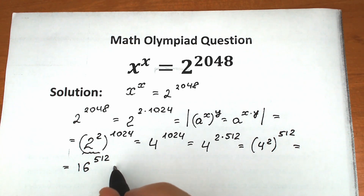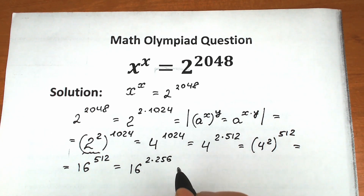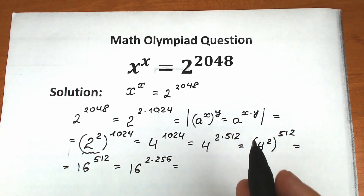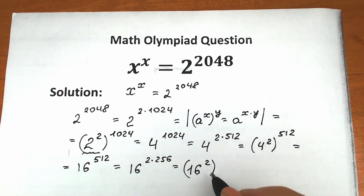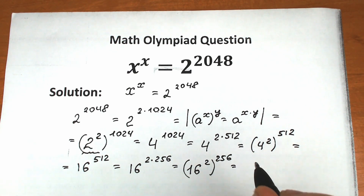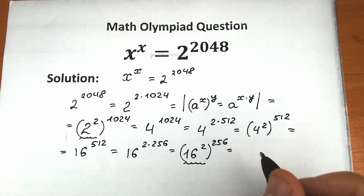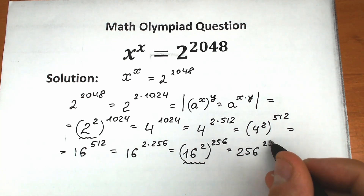Let's do this step once more. We have 16 to the power 2 times 256. Bringing the 2 inside as a power of 16 gives us 16 squared raised to the power 256. And this is a really great moment, because 16 squared equals 256. So we have 256 raised to the power 256.